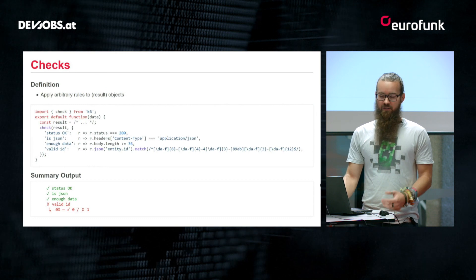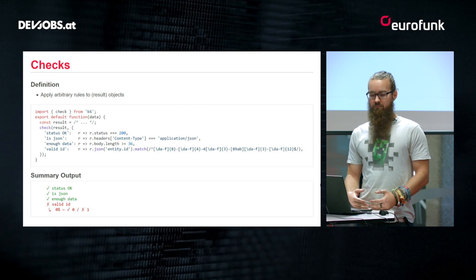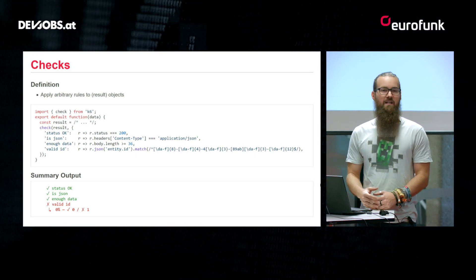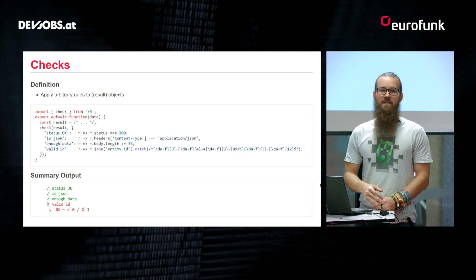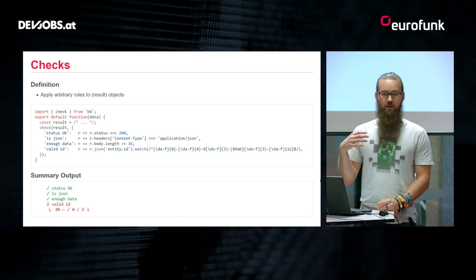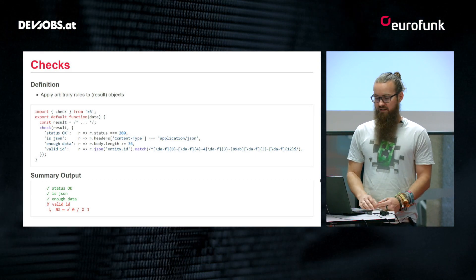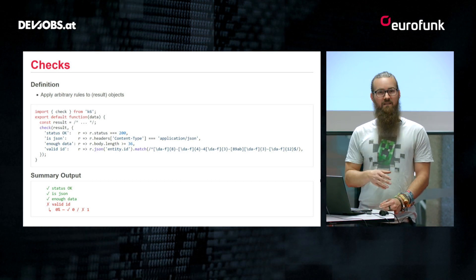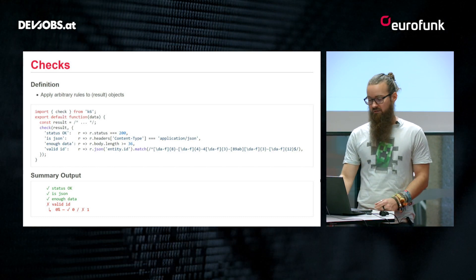Inside a test you will usually want to apply checks to the requests you make. You can apply arbitrary rules to any object in your test — typically HTTP responses. For example, you might check whether the HTTP status code is 200 OK, whether the content type is JSON, or whether it contains an ID matching a specific pattern. These checks are rendered in the final summary with green check marks if all checks succeeded, or red crosses if any failed, along with the percentage and absolute number of passed and failed checks.